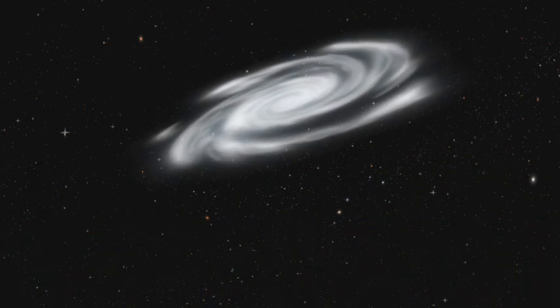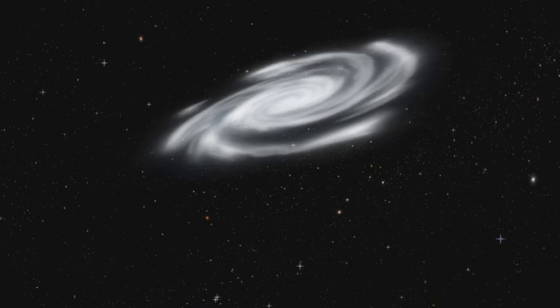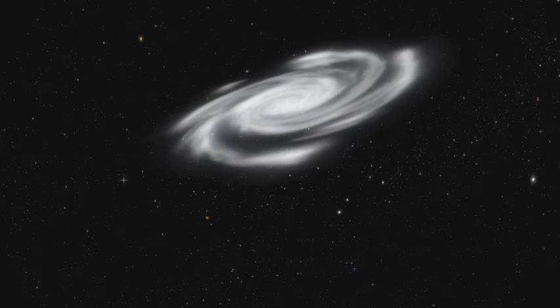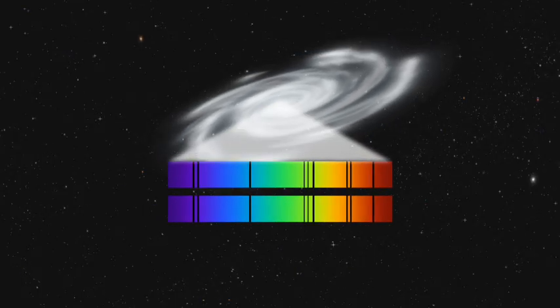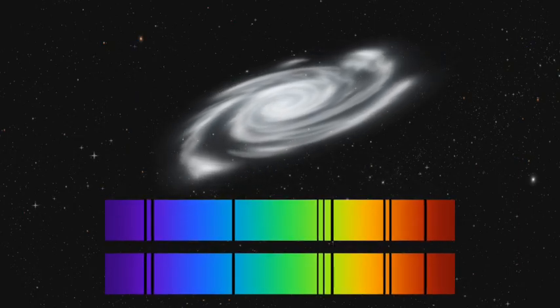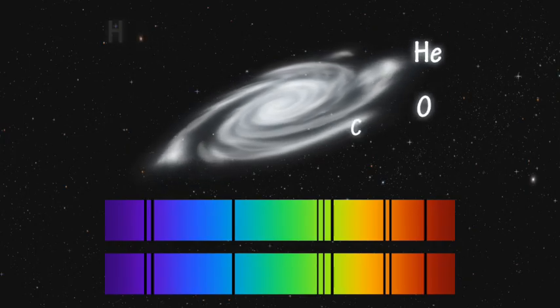Scientists can also use spectral lines to work out whether a galaxy like this is moving towards the Earth or away from the Earth. Let's compare two sets of spectral lines for this galaxy as we expect them to appear. The positions of the spectral lines are based on the absorption lines for various elements as they have been measured in laboratories on Earth.